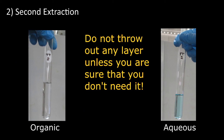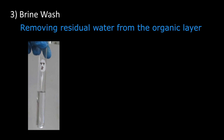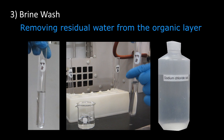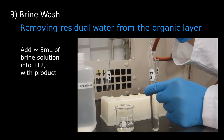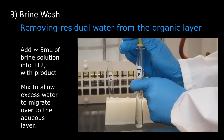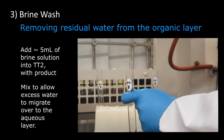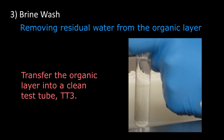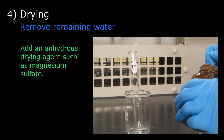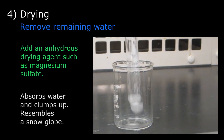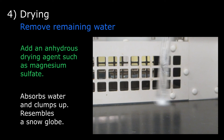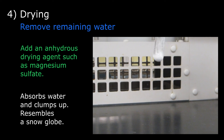This extraction step can be repeated to ensure that all of the product is isolated from the aqueous solution. Do not throw out any layer unless you are sure that you don't need it. Many organic solvents contain residual water. To remove the bulk of the water from the organic layer, it is rinsed with a saturated sodium chloride and water solution called brine. Add about 5 ml of brine solution into TT2 containing the product solution. After mixing, the excess water in the organic layer migrates over to the aqueous layer to establish equilibrium. Transfer the organic layer containing the product into a clean and dry test tube, TT3. To remove any remaining water, an anhydrous drying agent is added, such as magnesium sulfate. Add a spatula tip of the drying agent and swirl. The magnesium sulfate will quickly absorb the unwanted water, creating clumps in the flask. Once at least some magnesium sulfate is free flowing, no more needs to be added.